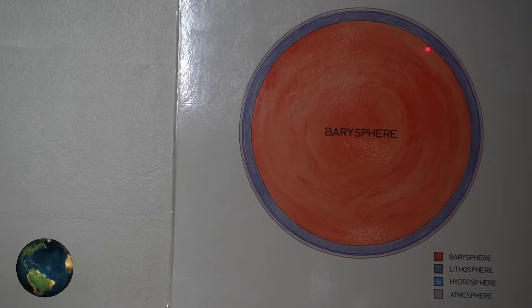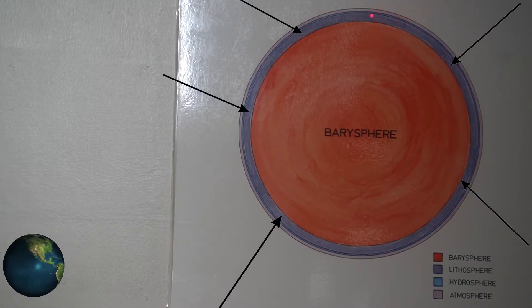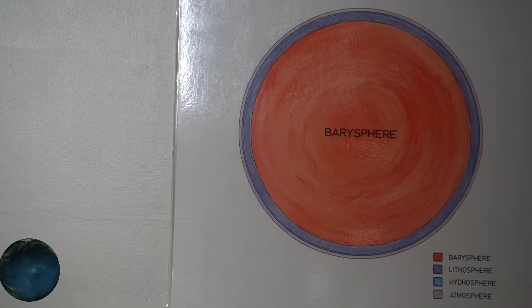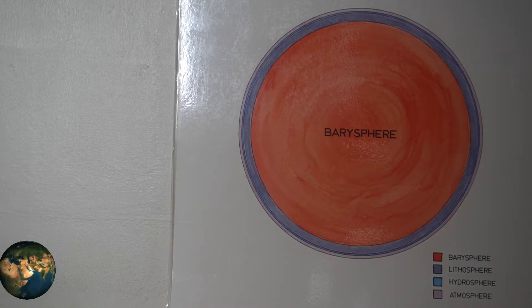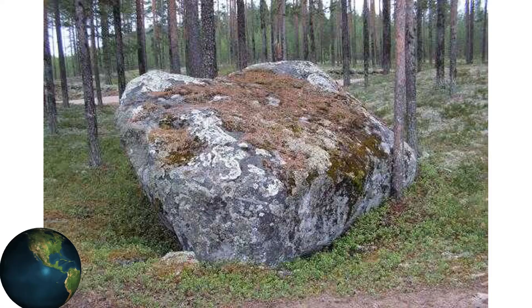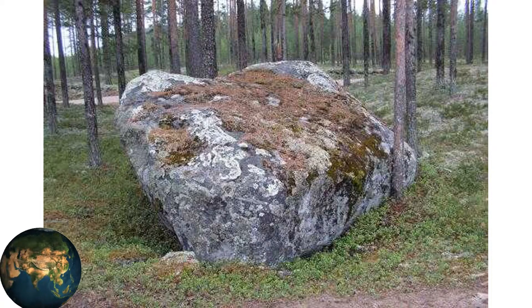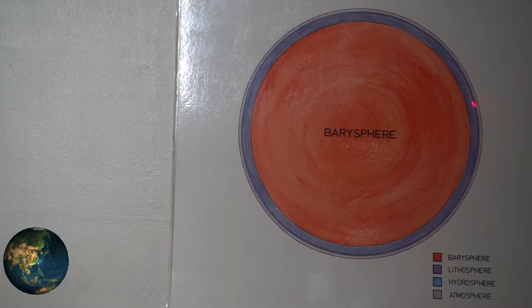Right on top of the barisphere settled a lighter part. It's called the lithosphere. It's the part that we live on, on top of the lithosphere — the stones and rocks all around us. 'Lithos' is a Greek word meaning stone. This is the lithosphere, where we live.